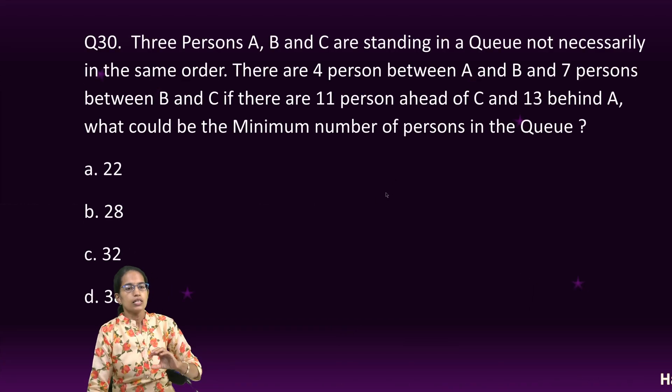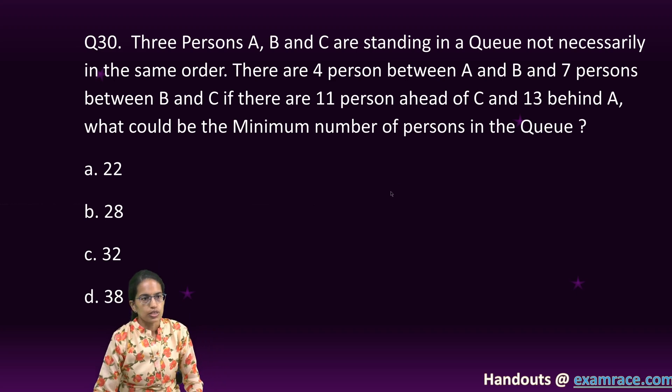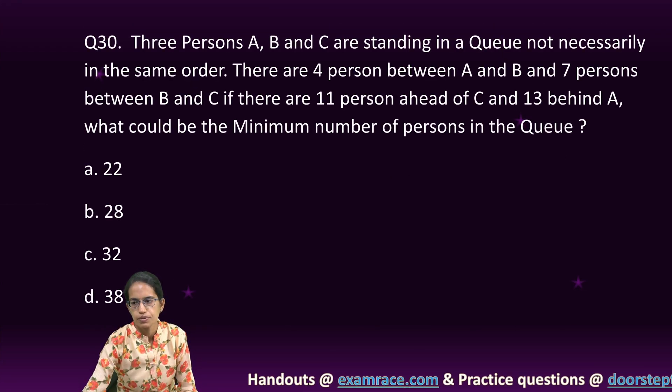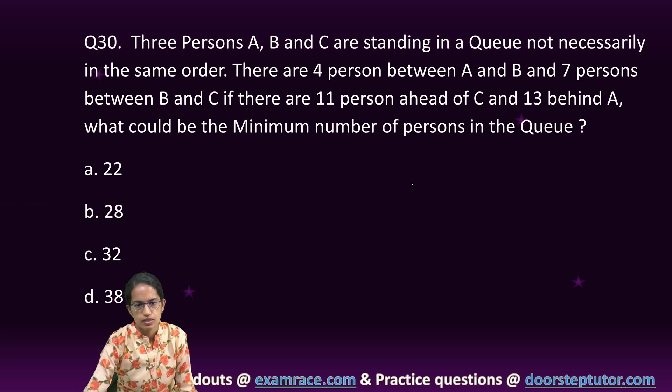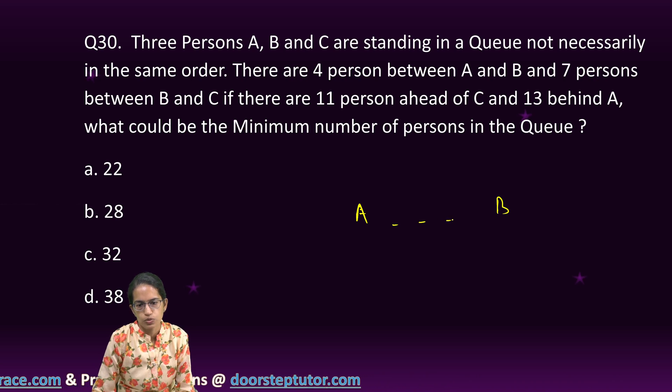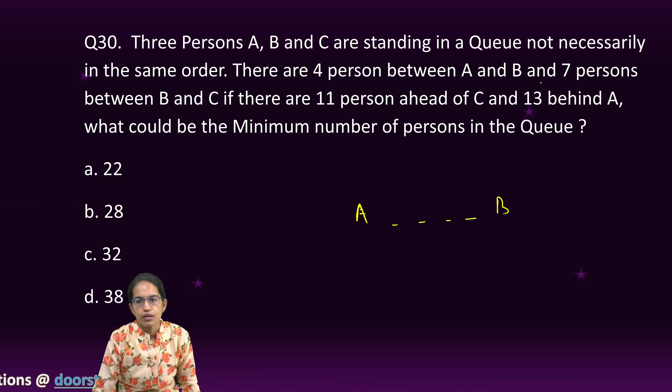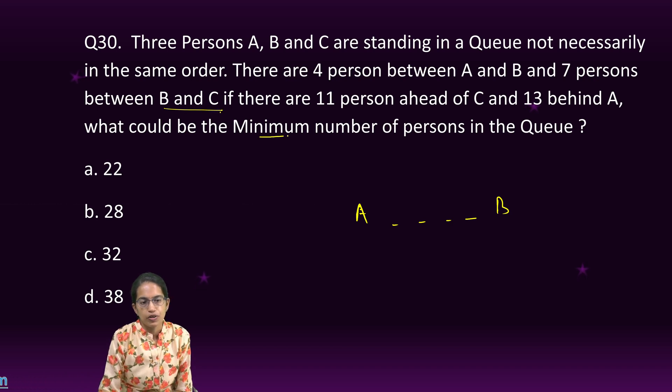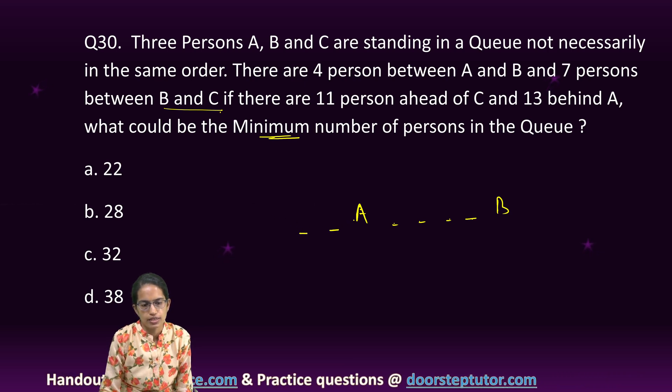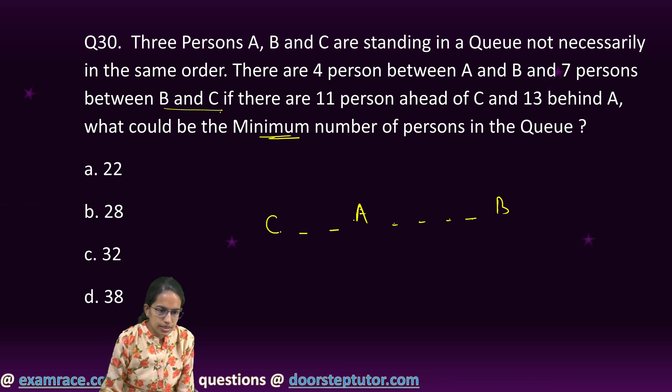The next question. Three persons, A, B and C are sitting in a queue. Not necessarily in the same order. There are four persons. Sorry. Just a second. There are four persons between A and B. So, between A and B, there is one, two, three, and four persons. And seven persons between B and C. I have to find out the minimum. So, if I keep C on the other side, it would be maximum. I keep C on this side. So, between B and C, there are seven. So, one, two, three, four, five, six, and seven. And this is C.